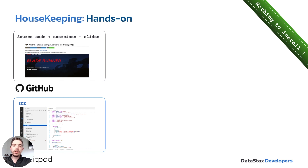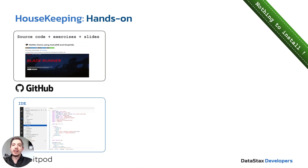We'll be using Gitpod, which is a cloud-based IDE that integrates really well with GitHub. You'll be able to launch a cloud-based IDE right out of our GitHub, and it will include a predetermined environment that we know works and has all the dependencies you need. It's really easy to get started and really useful.